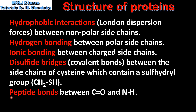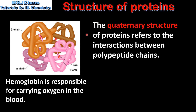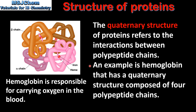And finally we have peptide bonds between a carbon double bonded to an oxygen and a nitrogen bonded to a hydrogen. The quaternary structure of proteins refers to the interactions between polypeptide chains. An example is hemoglobin, which has a quaternary structure composed of 4 polypeptide chains, which you can see here.